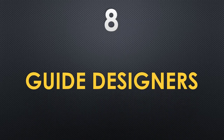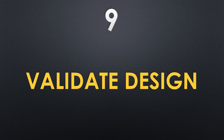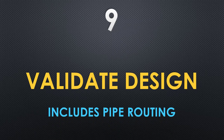Step eight is to guide designers. When preparing drawings, designers are the ones who develop them, so you have to give them your ideas, thoughts, and requirements, and guide them through any technical challenges to ensure the work is progressing. Step nine is to validate the design. Once the designer confirms the design, you as the design engineer must ensure it meets your requirements, the client's requirements, and the project specification — that all pipe routings are perfect, the design is safe, operable, and meets accessibility and maintenance requirements.